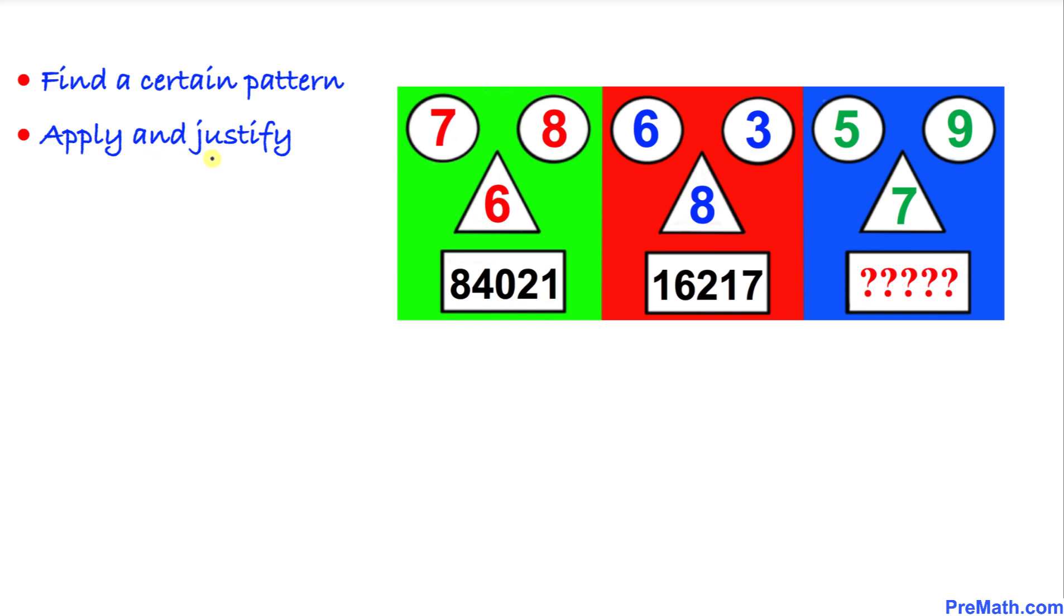Now let's focus on this green face on the left-hand side. We've got these three numbers: 7, 8, and 6. If we add these numbers, 7 plus 8 plus 6, we are going to get 21.